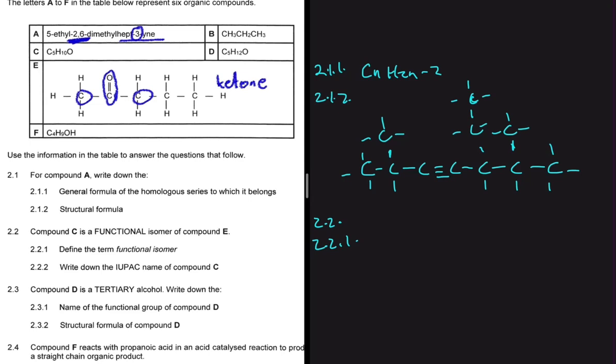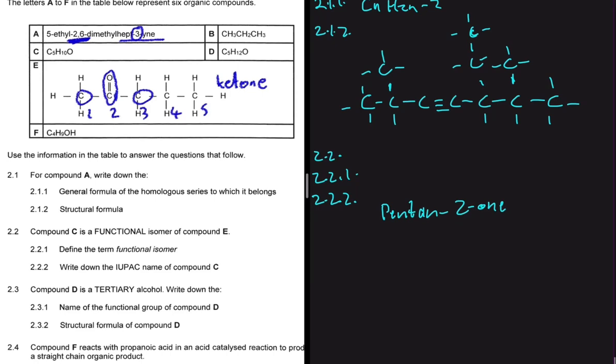And then moving to 2.2.2, it's saying let's write down the IUPAC name of compound C. So compound E, we have one, two, three, four, five carbons. So it's supposed to be pentane-2-one. And then now compound C is a functional isomer of compound E. So it will be pentanal. That is pretty much straightforward. No trick idea whatsoever.